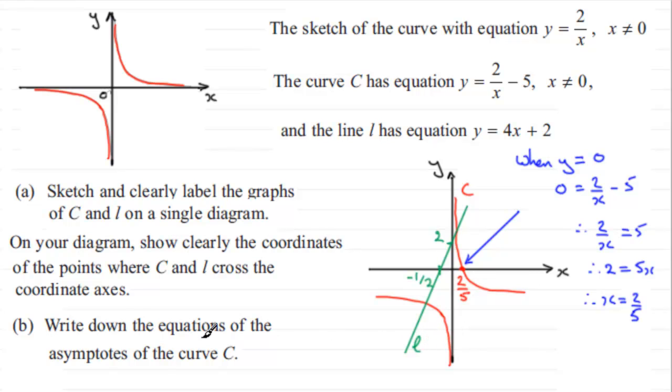Now in part B, we've got to write down the equations of the asymptotes of the curve C. And that is a line that the curve approaches but never crosses. We've got one of them is the y-axis. The other one is the one that crosses here. This is the one at minus 5. We took the graph here and we pulled it down by 5 units, so it's going to be approaching this line that I've dotted here. And so the y-axis has the equation x equals 0. So for the asymptotes, you've got x equals 0, and then this line here is y equals minus 5.